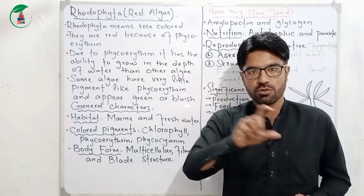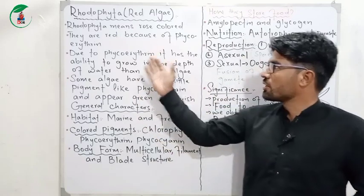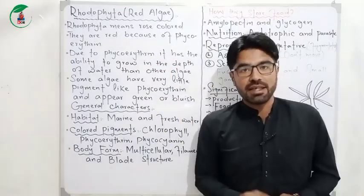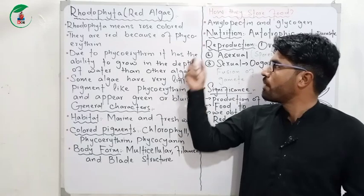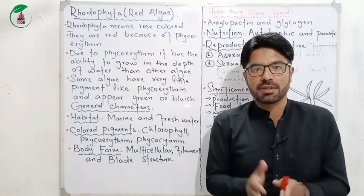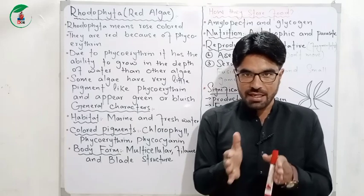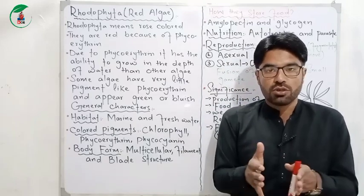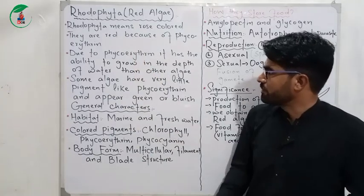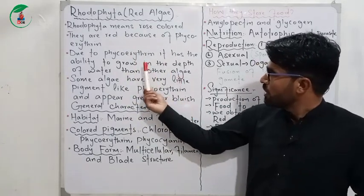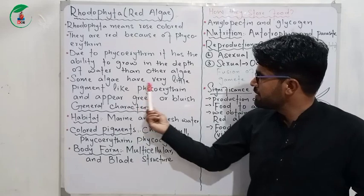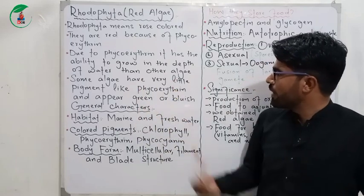Red algae have a red rose colour. They are red because of a pigment called phycoerythrin. Due to phycoerythrin, red algae have the ability to grow at greater depth in water than other algae.